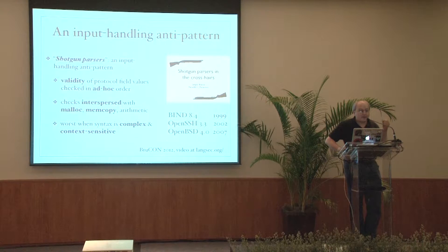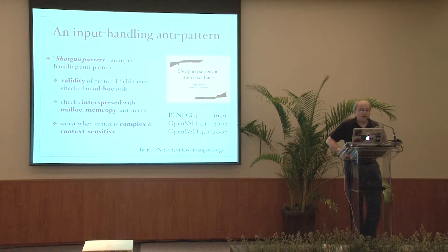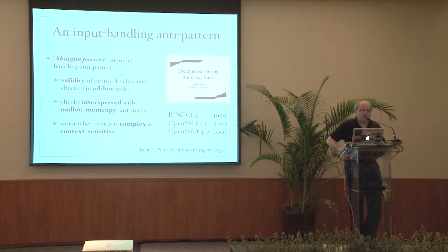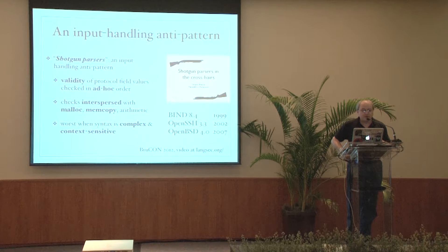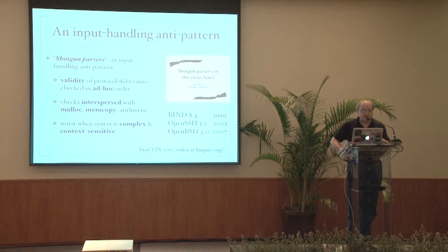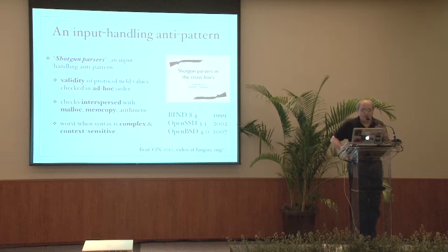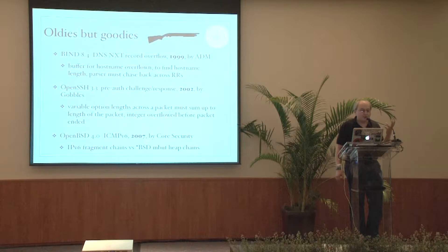There are famous examples of people who cared. BIND 8.4 was our first example. OpenSSH 3.3 had a pre-authentication vulnerability — pretty bad: pre-auth, remote code execution, exploited by Gobbles in 2002. OpenBSD 4.0 in 2007 was vulnerable to an ICMPv6 fragmentation attack and was remotely exploited by Core Security. Those were pretty complex bugs that also made the ponies at some point.